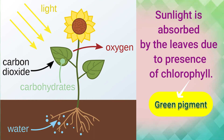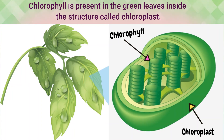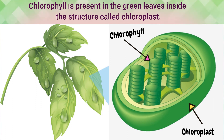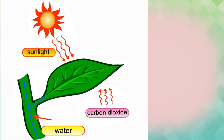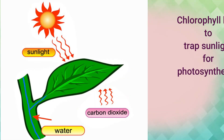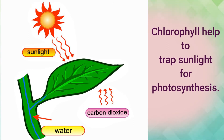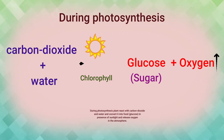How is chlorophyll important? Chlorophyll is present in the green leaves inside a structure called the chloroplast. This chlorophyll helps to trap sunlight for photosynthesis.